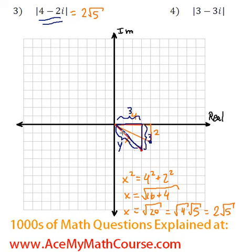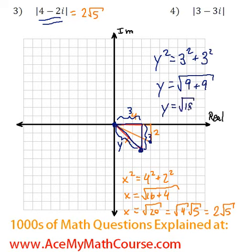So what is the absolute value? Just the distance between the origin to the point. That would be y squared equals 3 squared plus 3 squared. Y would be the root of 9 plus 9, so y is the root of 18.